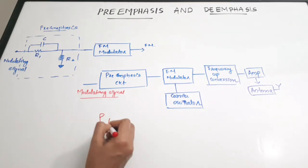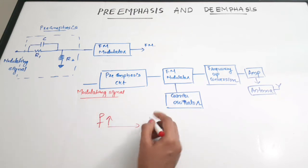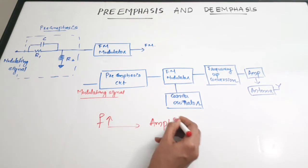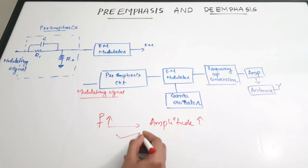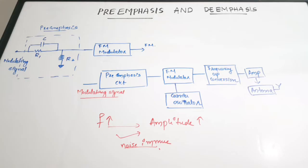This artificial boost of amplitude of higher frequency modulating signals improves noise immunity. When the frequency is increasing, that higher frequency range has increased amplitude, making the signal noise immune. This artificial boosting of higher modulating frequencies is called pre-emphasis.